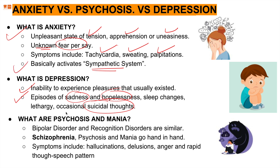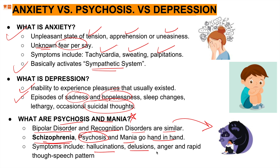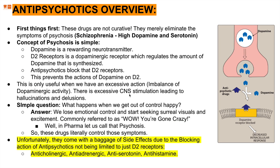Psychosis and mania include bipolar disorder and recognition disorders. Schizophrenia is a form of psychosis, and mania goes hand in hand with it because they all involve a lot of anger, hallucinations, delusions, and rapid thought and speech patterns.